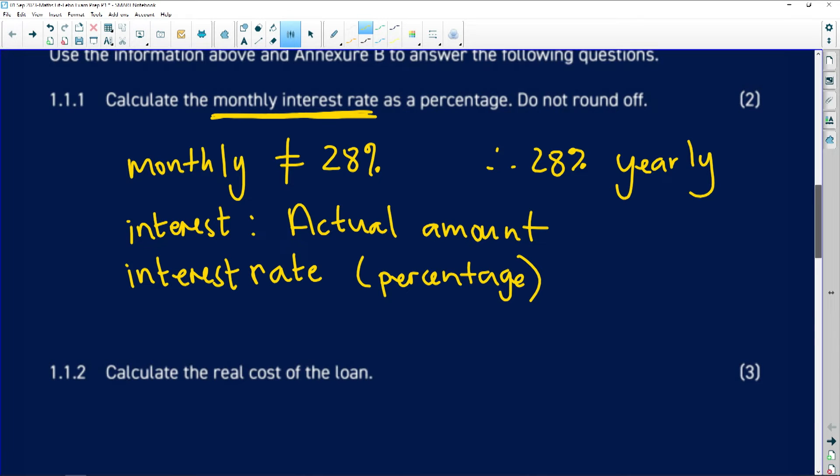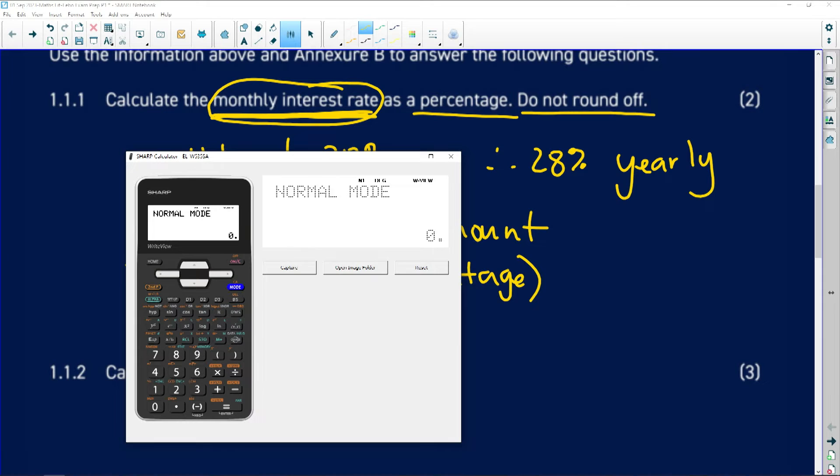We would then take that 28%. So I would say 28% and divide that by 12 because it's per annum. And that is going to give me my monthly interest rate. And then it says percentage and it says do not round off. So let's go and see what that would look like. So I would say 28 divided by 100, and then I divide that by 12. That's going to give me my monthly interest rate.